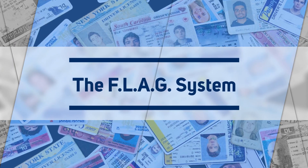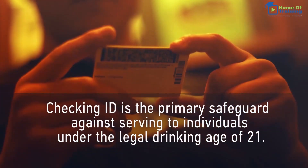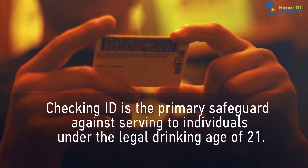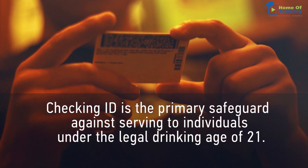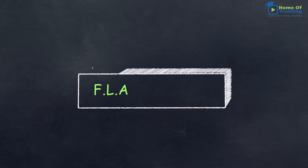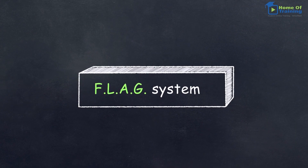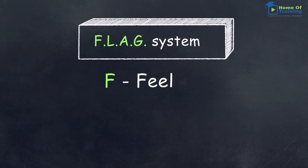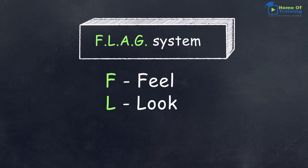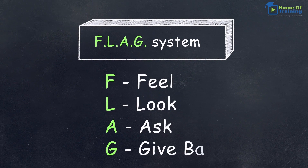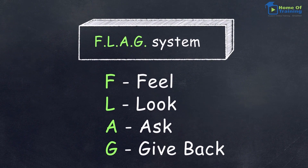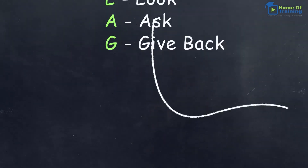The FLAG system. Checking ID is the primary safeguard against serving to individuals under the legal drinking age of 21. One approach that may be taken at your establishment is the FLAG system. FLAG stands for Feel, Look, Ask, and Give back. Let's take a look at what each individual letter represents.